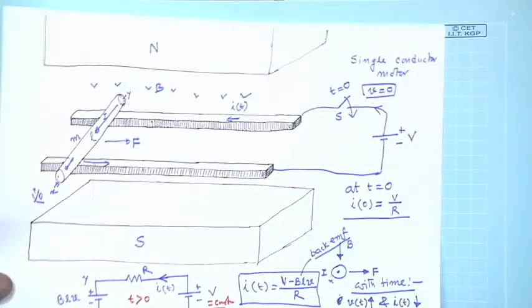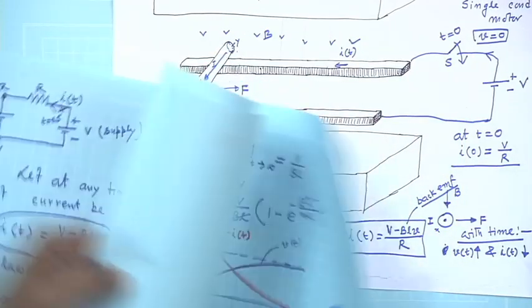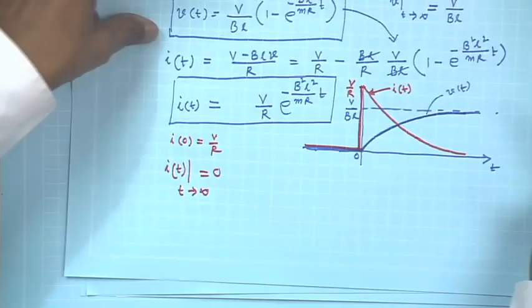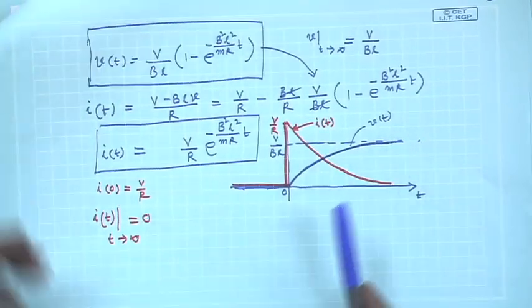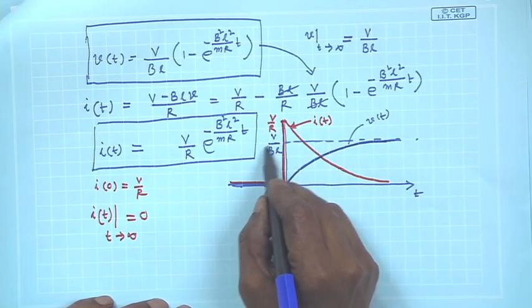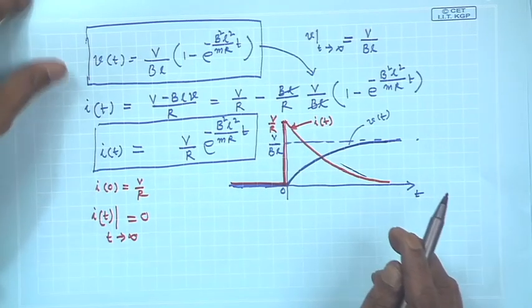We were discussing about a single conductor motor. In the last class we got the final expressions of current and velocity. The final value of velocity will be V divided by BL, and the final current in the circuit will be 0.